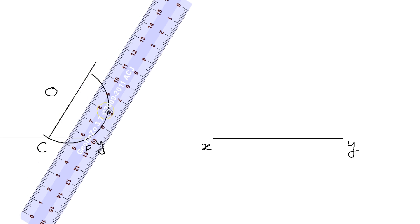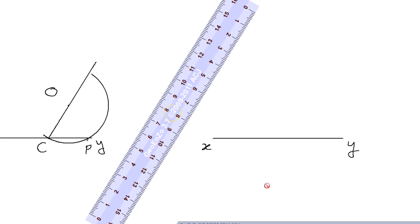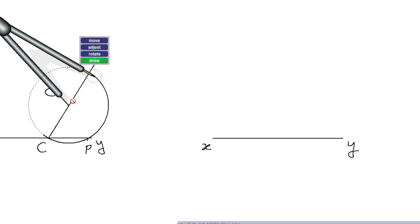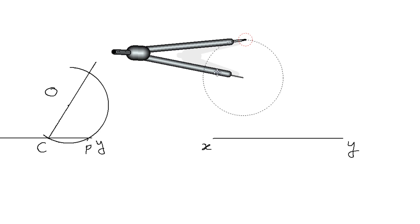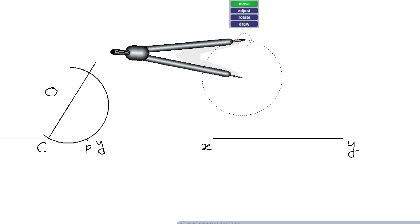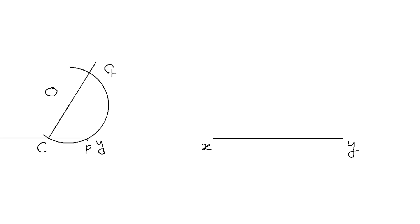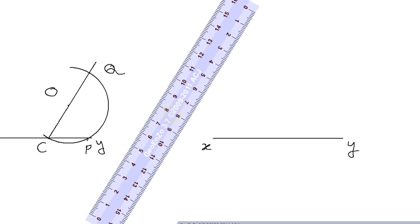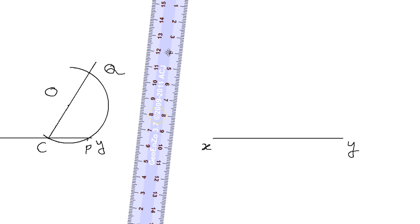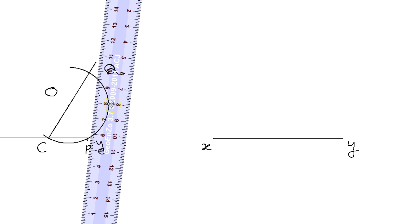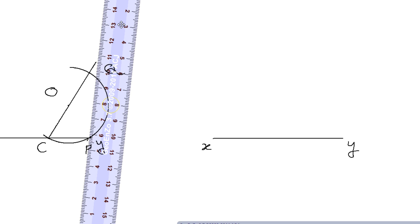The earlier arc was a little bit small, so I'll extend it a little bit. Let us say it cut the arc at a point — let us say this point is Q. Now take the scale and join point P and Q. The line PQ will give you the required perpendicular.